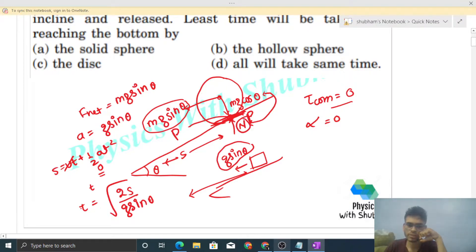Normal reaction and mg cos theta are passing through that point, but what about mg sin theta? Will mg sin theta produce torque? Will there be net torque about point P? If net torque comes, then why is the body not rotating about point P?